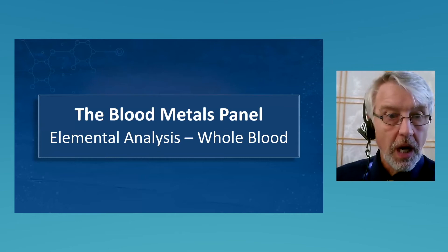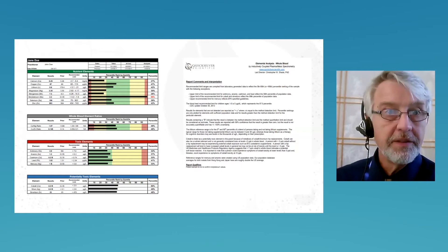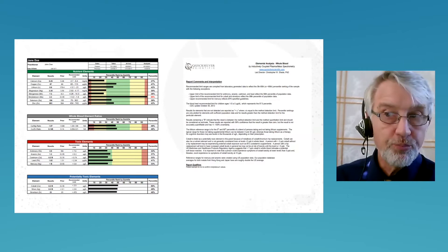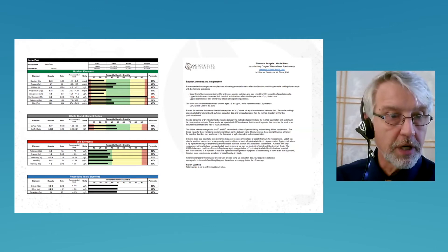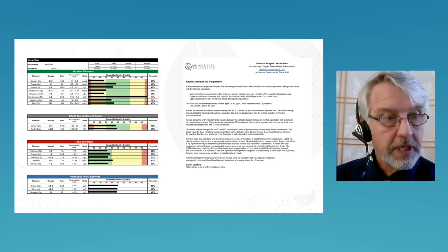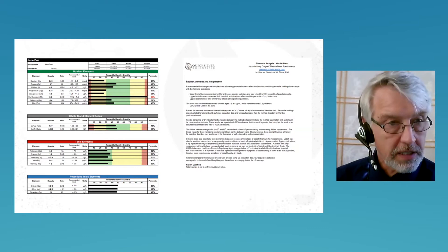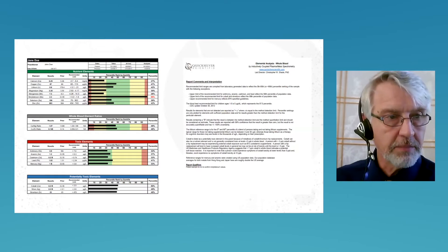Just a couple of slides on the Quicksilver blood metals panel. In this panel, mercury is represented by only total mercury. You'll see there are eight different nutrient elements and eight different toxic elements, and then whole blood element ratios between calcium, magnesium, copper, and zinc. We'll go into that in more detail in a later webinar.